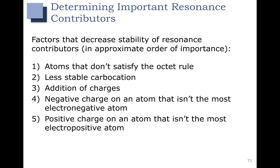This is a list of factors that decrease stability of resonance contributors, in approximate order of importance. The first one is atoms that don't satisfy the octet rule. This is a destabilizing effect, and if you have an atom that doesn't satisfy the octet rule, the resonance structure that has this atom is going to be a less significant contributor.